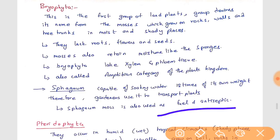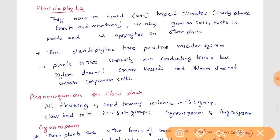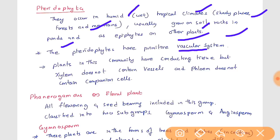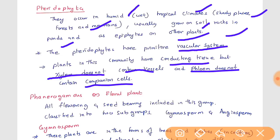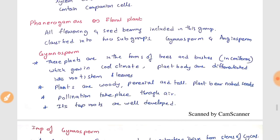Pteridophyta occur in humid tropical climates — shady places, forests, and mountains — and usually grow on soil, rocks, in ponds, and as epiphytes on other plants. Pteridophytes have a primitive vascular system; plants in this group have conducting tissue but xylem does not contain vessels and phloem does not contain companion cells.